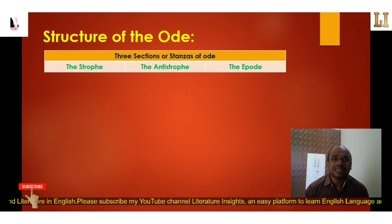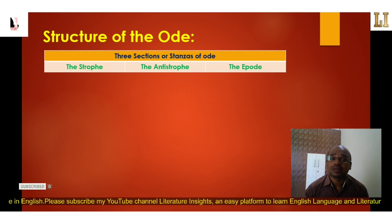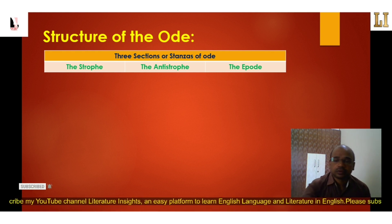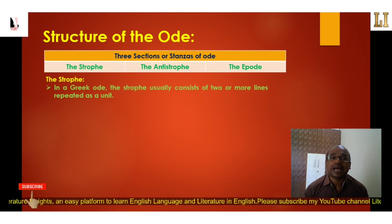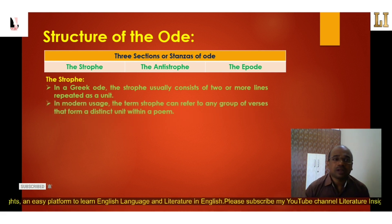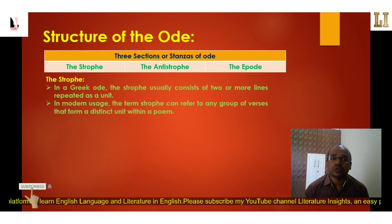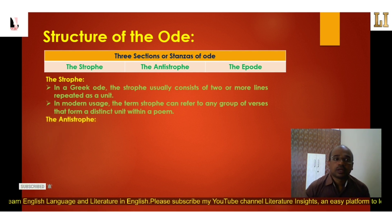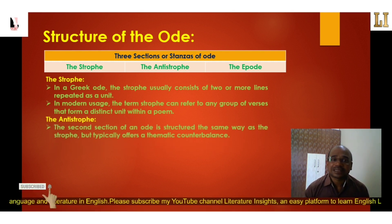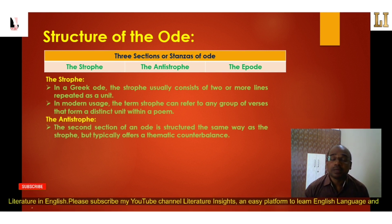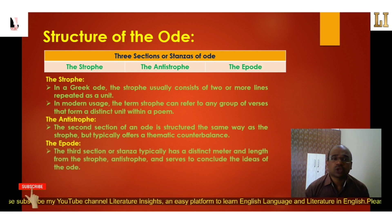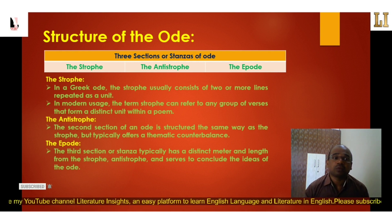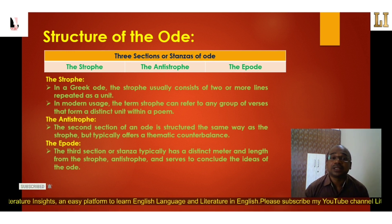Now let's look at the structure of the ode. There are three sections or stanzas which are very important: the strophe, the antistrophe, and the epode. In a Greek ode, the strophe usually consists of two or more lines repeated as a unit; in modern usage, it can refer to any group of verses forming a distinct unit. The antistrophe is structured the same way as the strophe but typically offers a thematic counterbalance. The epode, the third section, has a distinct meter and length from the strophe and antistrophe, and serves to conclude the ideas of the ode.